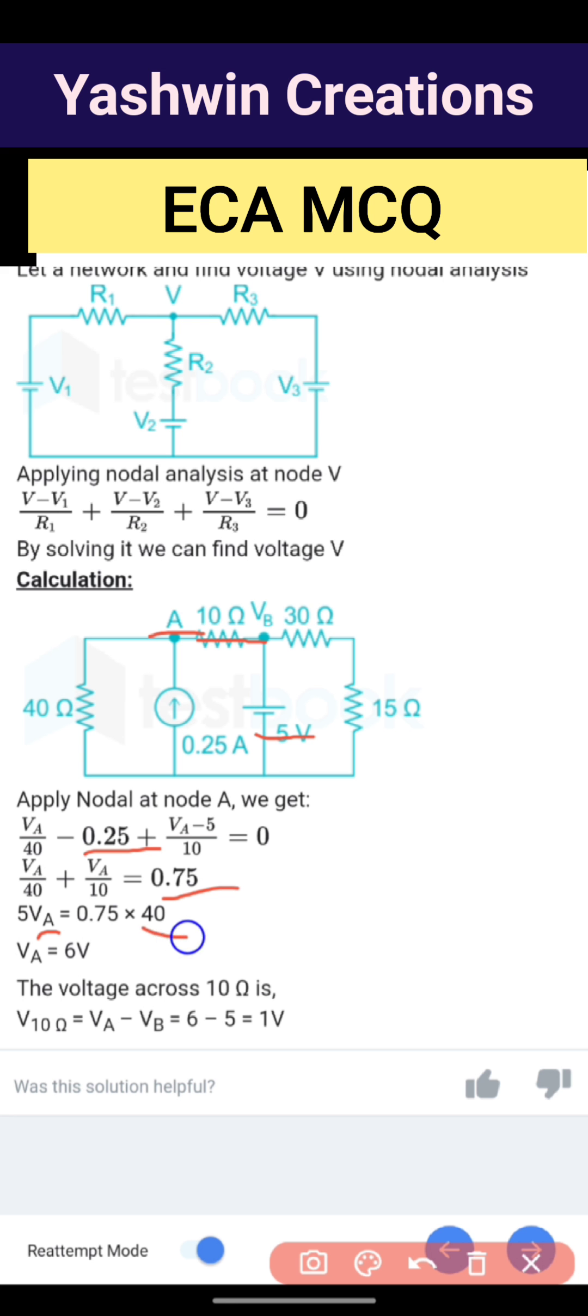And if you multiply 0.75 into 40, you will get 30. So 30 divided by 5, Va is equal to 6 volts.